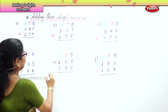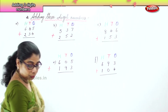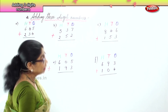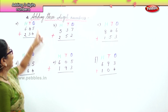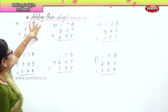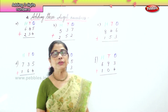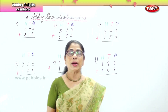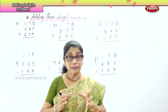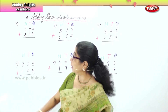So I have six sums for us to work out. Now, let's see. We are adding three-digit numbers. When it is three digits: ones, tens, hundreds. First, we need to write ones, tens, hundreds. Add all the ones first, then add all the tens, then go to the hundreds.